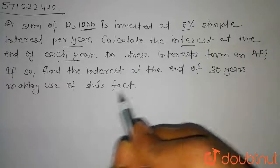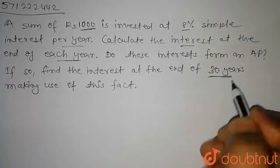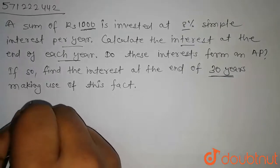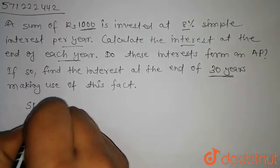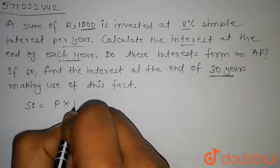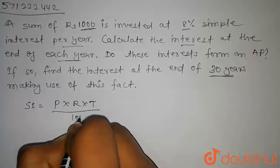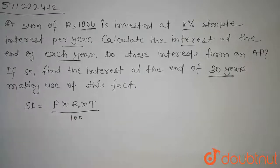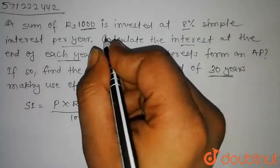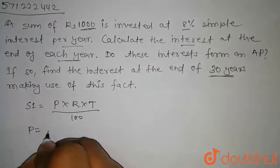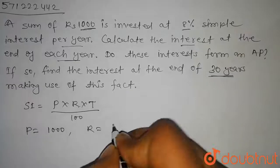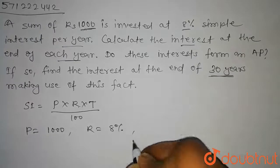If so, we have to find the interest at the end of 30 years. First of all, we know that the formula of simple interest is equal to P into R into T by 100. Here P is the principal, R is the rate, and T is the time. In the question it is given that P is equal to 1000 and R is equal to 8%.